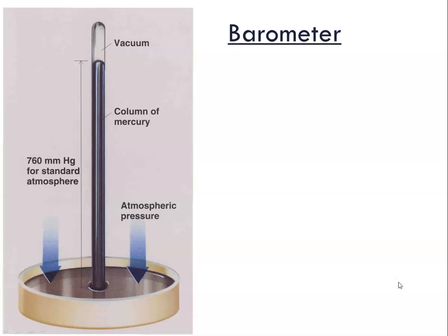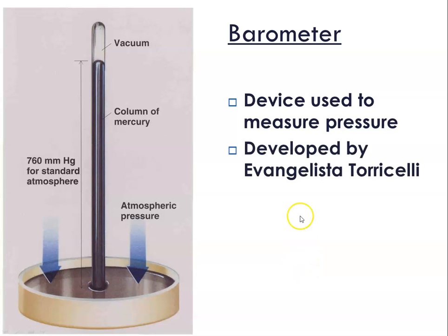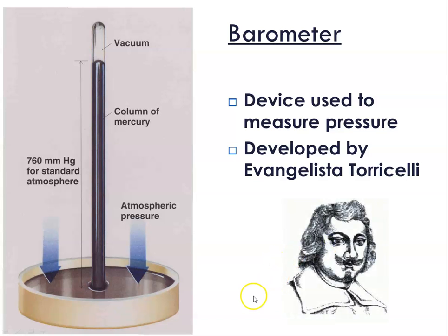The way we measure pressure is using a device called a barometer. This is an early version where there was a dish of mercury, which is a liquid at room temperature, and a vacuum tube was suspended upside down in it. The atmospheric pressure pushing down on the surface changes the height of the column of mercury. A barometer was developed by Evangelista Torricelli, and there's a picture of him.